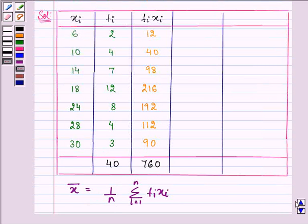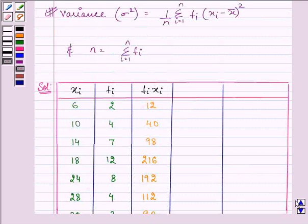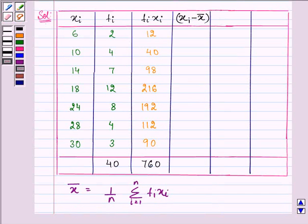Then we need to find out the variance also. So for that as indicated in the formula we need to firstly subtract the mean from the observation to obtain xi minus mean and then we will find out its square and multiply it by fi.